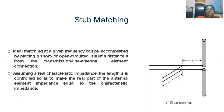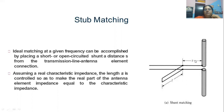Ideal matching at a given frequency can be accomplished by placing a short or open circuited shunt at a distance from the transmission line antenna element connection. A transmission line whose length is L is connected in shunt with the regular transmission line. This shunt connection of the transmission line at a particular distance is known as the stub. If we want to match the antenna with the transmission line, we have to match the load by connecting a shunt line whose points represent the matching of impedances of the antenna with the transmission line.